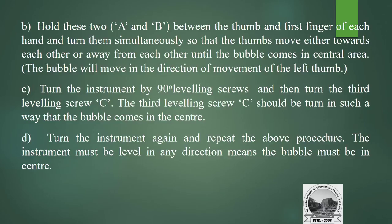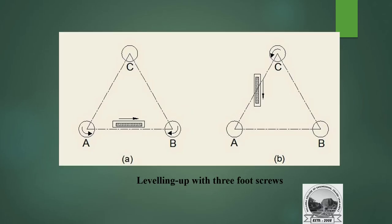Turn the instrument 90 degrees and then turn the third leveling screw C until the bubble comes to center. Repeat the procedure — the instrument must be level in any direction with the bubble at center. Screws A and B are turned simultaneously in opposite directions (one clockwise, one anti-clockwise) until the plate level bubble centers. Then foot screw C is rotated until the bubble in the plate level also comes to center. This completes the adjustment of the dumpy level.